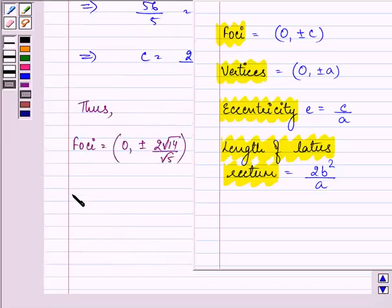Further, vertices is equal to (0, ±a), that is 6/√5.